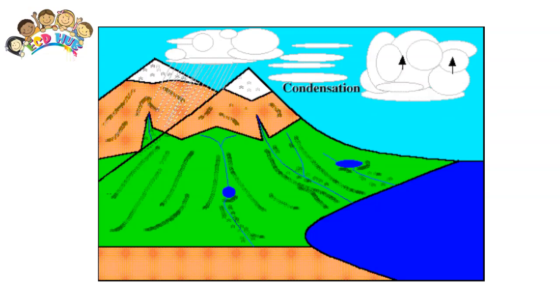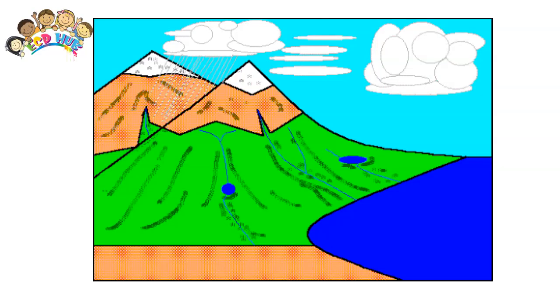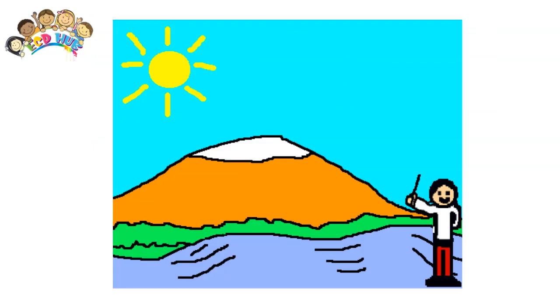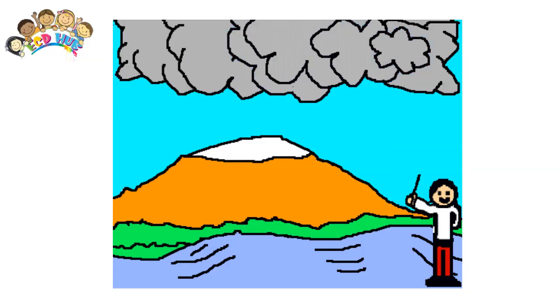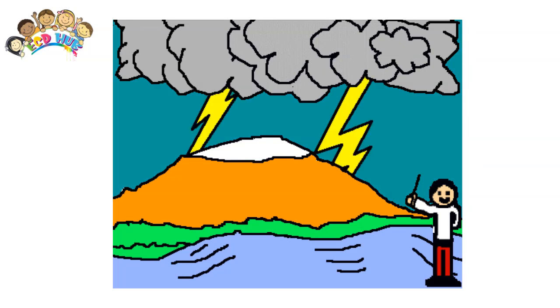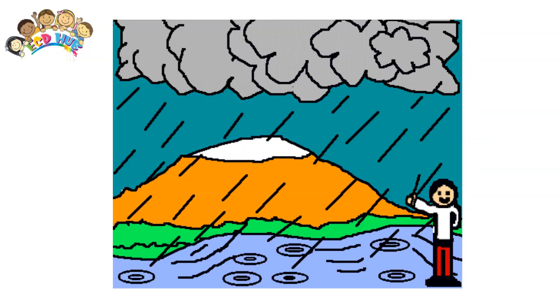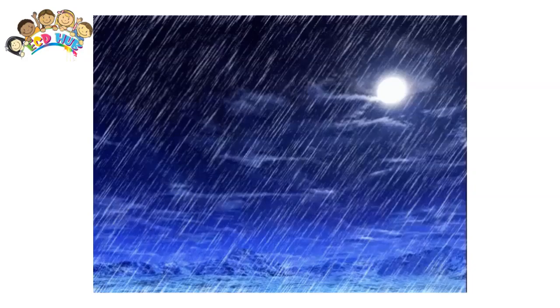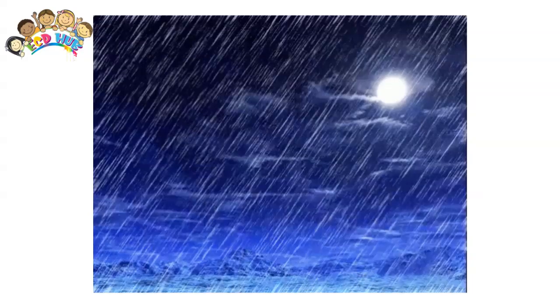Precipitation: The water droplets in clouds attract other water droplets to them and they grow bigger. When they get too big and heavy, they fall to ground as rain. If the air is cold enough, the droplets remain frozen and fall as snow or hail.